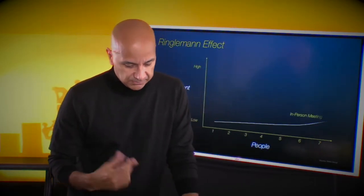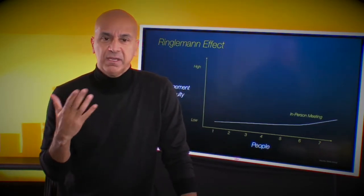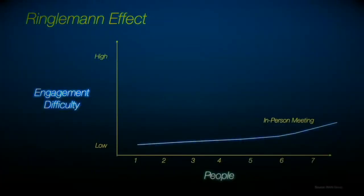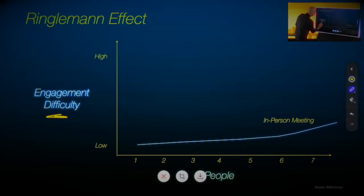So what they found out, the Rain Group, is that when we have in-person meetings, what they wanted to understand was what's the engagement level. So engagement difficulty here is, for example, in a regular meeting. And so what they found is that the ideal number for an in-person meeting is around six. That's an interesting number.